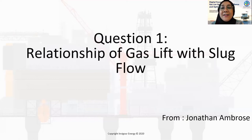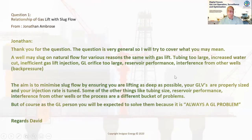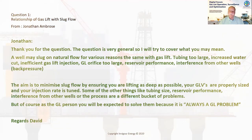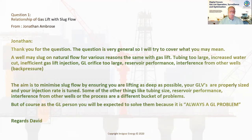Thank you, Jonathan, for the questions you sent earlier. The question is about the relationship of gas lift with slug flow. The question is very general, so I'll try to cover what I think you may mean. A well may slug on natural flow for various reasons — the same with gas lift. The tubing could be too large, increased water cut, inefficient gas lift injection, your orifice is too big, reservoir performance, or interference from other wells. The aim is to minimize slug flow by ensuring you are lifting as deep as possible, gas lift valves are properly sized, and your injection rate is tuned.